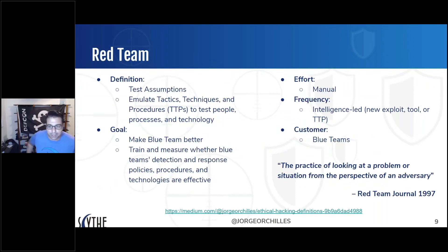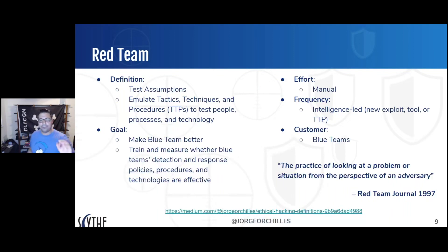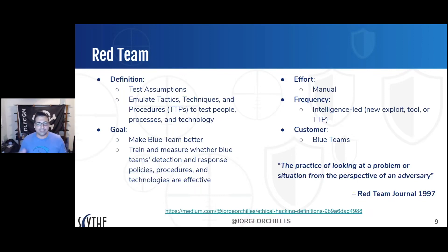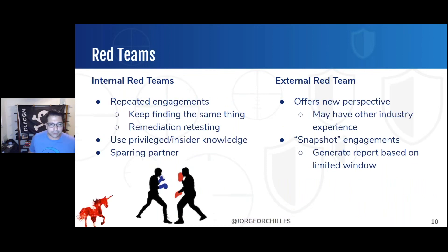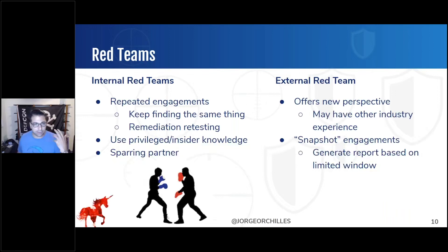Can't do a talk on red team without defining it. All these slides are available to you. The definition: test assumptions, emulate tactics techniques and procedures, don't only test technology — test people, process, and technology. It's very manual. You can't automate a red team, despite what some marketing vendors say. Once you do get to running various TTPs, you might be able to automate some of those.